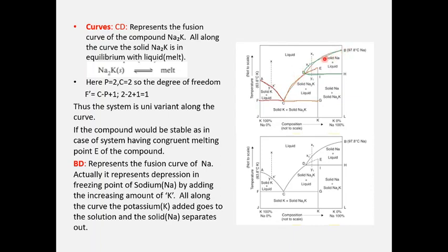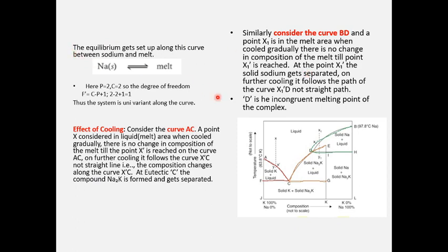Curve BD represents the fusion curve of sodium, or the depression in freezing point of sodium as potassium is added. Point B represents pure solid sodium. Along curve BD, solid sodium is in equilibrium with the melt. Here too there are two phases and two components, so substituting into the reduced phase expression gives a degree of freedom of 1 — the system is univariant along this curve.